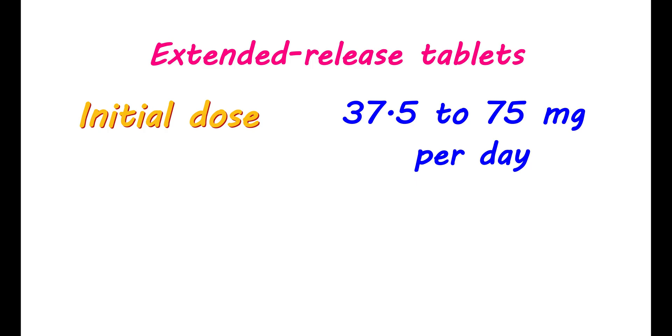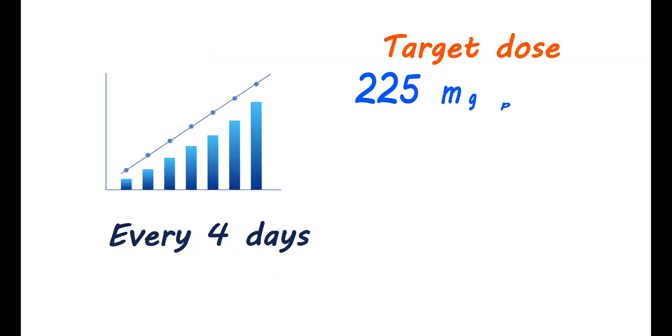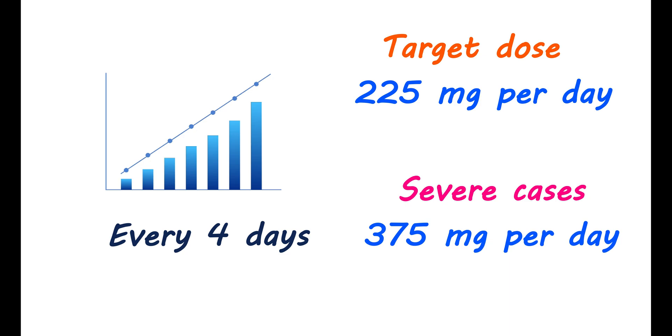You may also be given extended release tablets at an initial dose of 37.5 to 75 mg per day. However, remember that these tablets are intended to be taken once a day. The dose can be increased every four days to achieve a target dose of 225 mg per day given in divided doses. However, in severe cases, it may be increased to 375 mg per day.